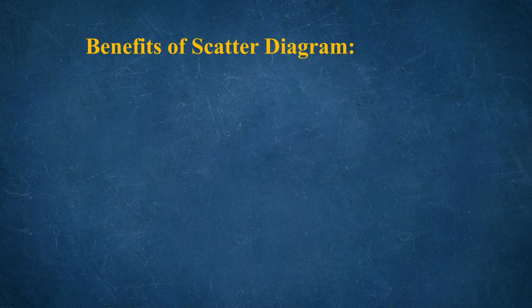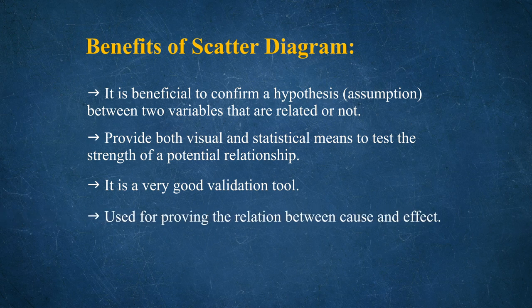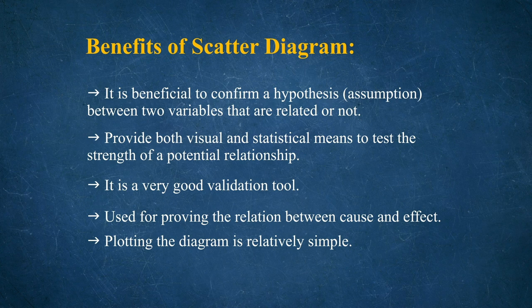There are benefits of the scatter diagram. It is beneficial to confirm a hypothesis assumption — when we do the literature review, we explore the gap, frame objectives, and form hypotheses. The scatter diagram is beneficial to confirm a hypothesis assumption between two variables that are related or not related, and it provides both visual and statistical means to test the strength of a potential relationship.